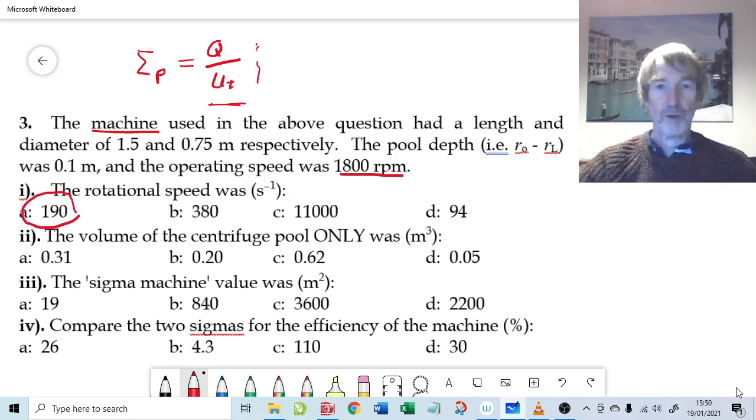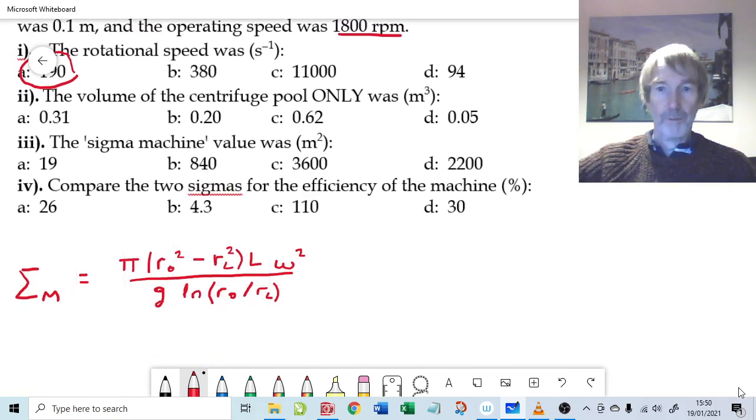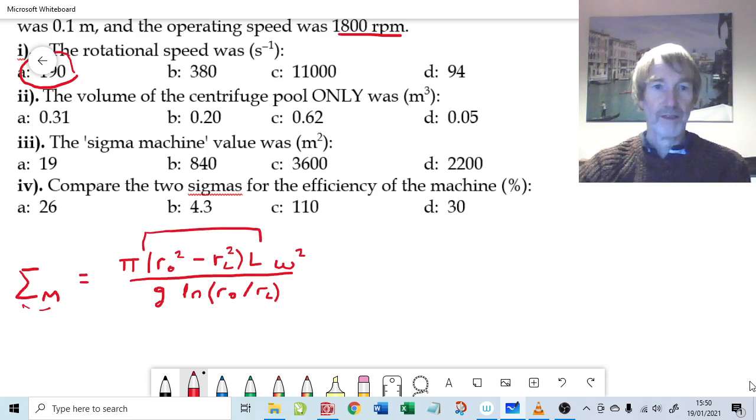Now here's the volume of the centrifuge pool. I'll just move this up a little bit to help with the calculation here. Why are we calculating the volume of the centrifuge pool? Because the equation for sigma machine doesn't appear to have the volume in it. Well yes it does, because this is the volume of the centrifuge pool. I could actually take that out and substitute in capital V for volume.